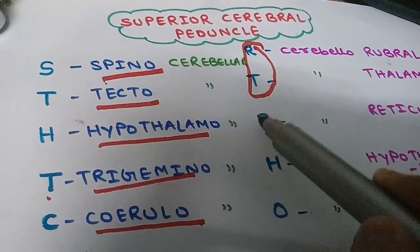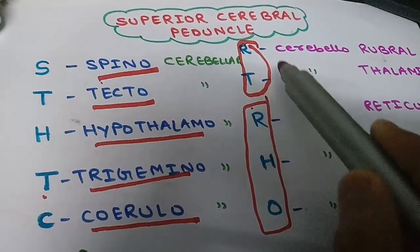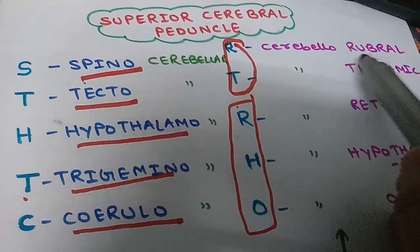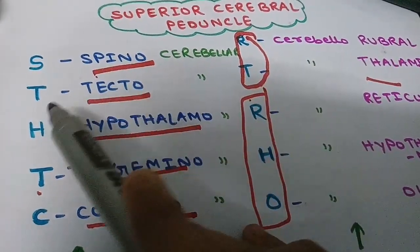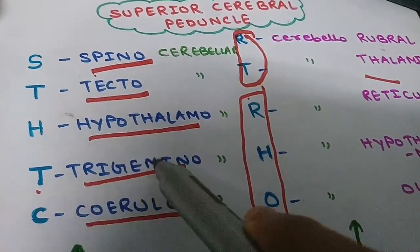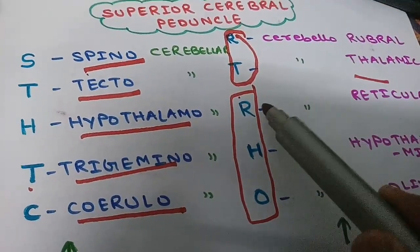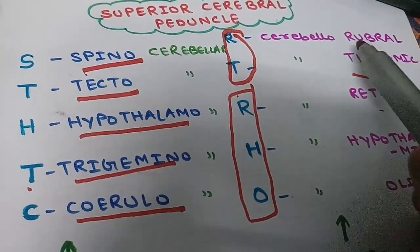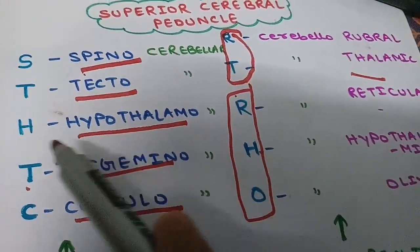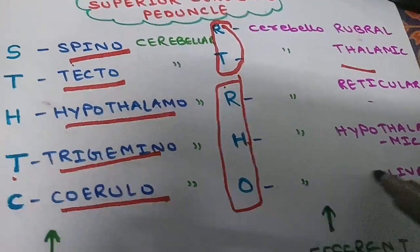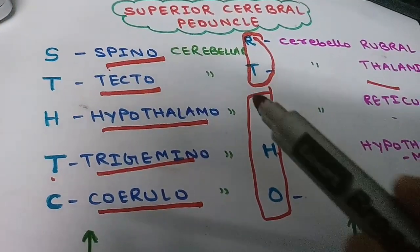Right — RT row, okay. Right row: R4 rubrospinal. He for — tell me — my need. He for take, he for pricemen. And T4 — tell me, tell me — this R4 reticular. And these are: R4 rubral, S4 hypothalamic — here also hypothalamic — and O4 olivary. Okay, so this was the structure.